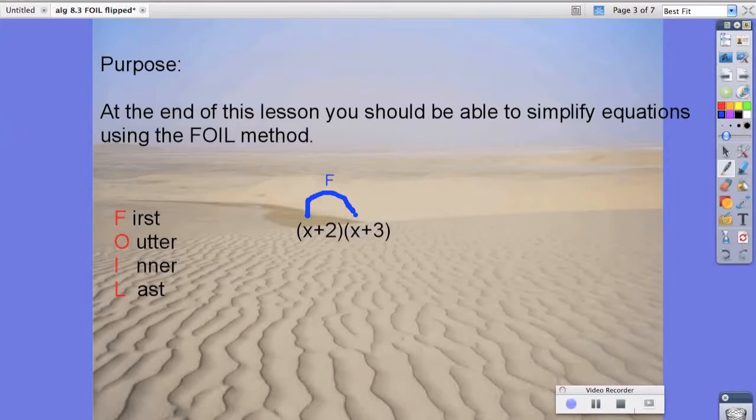If you look at the binomials as a whole, the two outer items are the ones on the outsides. So x, and then 3, so that's our outer.